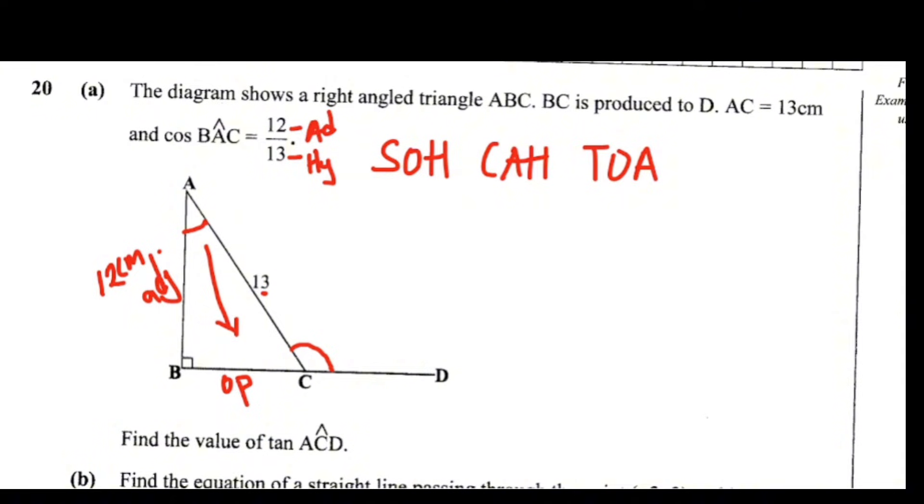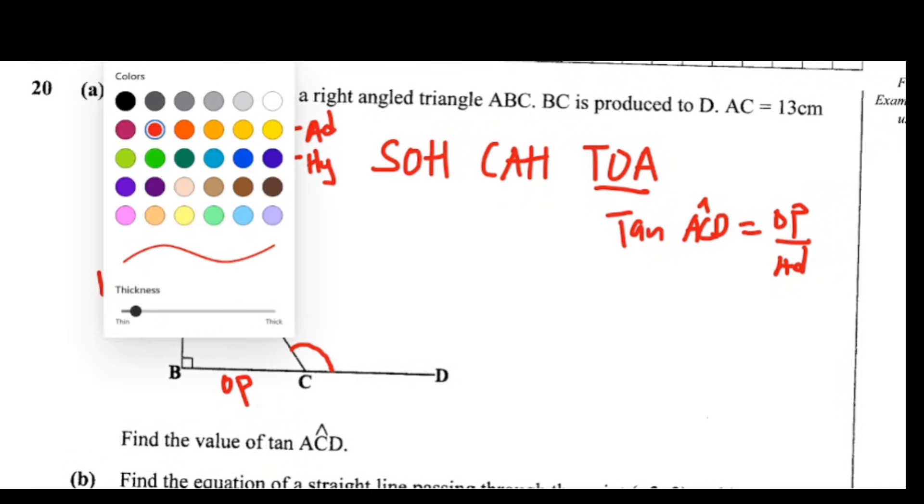In order to find the tan, so we understand that tan ACD is equal to opposite over adjacent, where you say opposite over adjacent. Now here, you don't have the value of the opposite, so first thing, find the value of the opposite. So let's find the value of the opposite. So opposite is BC.